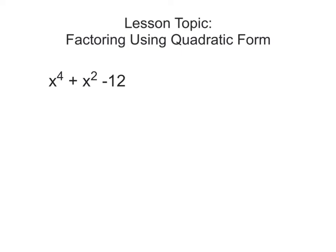The lesson topic for this video is factoring using quadratic form. What you see in front of you is x to the 4th plus x squared minus 12. This is different from what we have been doing with factoring quadratics, but it's pretty much the same thing. I'm going to change this to x squared plus x minus 12 — looking at x to the 4th as x squared, and this x squared as just x for a minute.